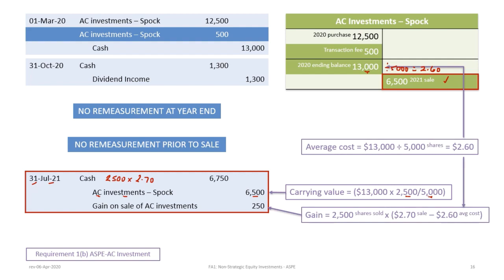The difference between $6,750 cash received and the $6,500 book value is a gain of $250. We can confirm: 2,500 shares sold times the difference between the sale price of $2.70 and the average cost of $2.60 — where $13,000 divided by 5,000 shares equals $2.60 — gives $0.10 times 2,500 equals $250. So we debit Cash $6,750, credit AC Investments — Spock $6,500, and credit Gain on Sale $250.